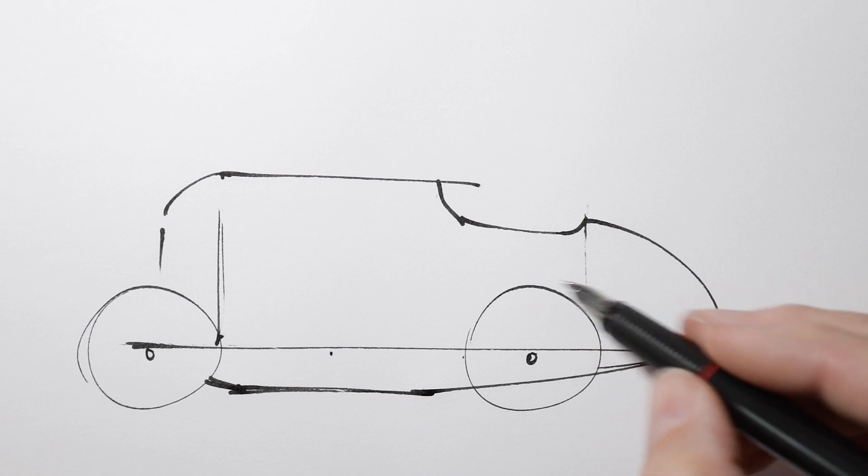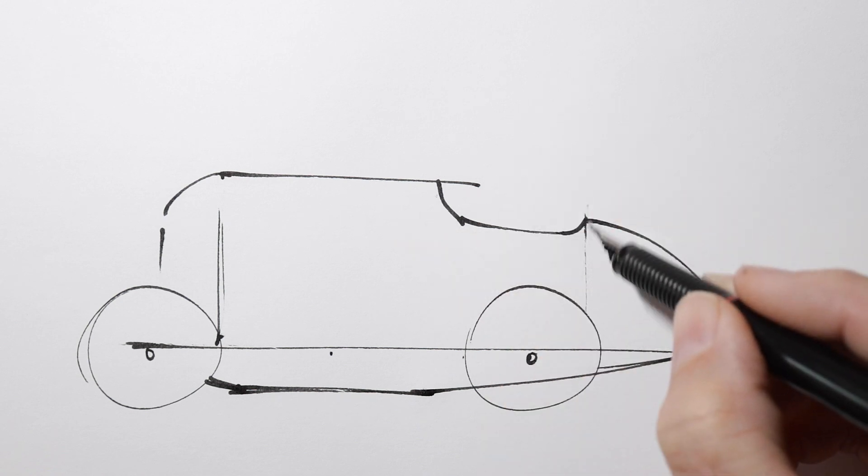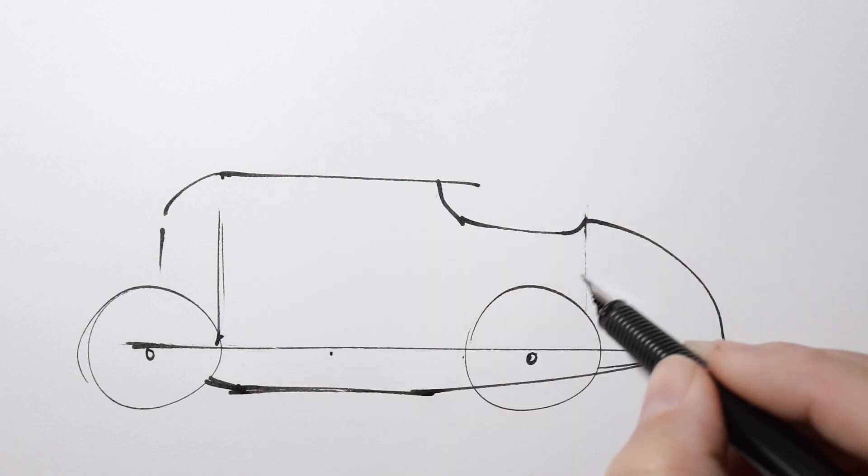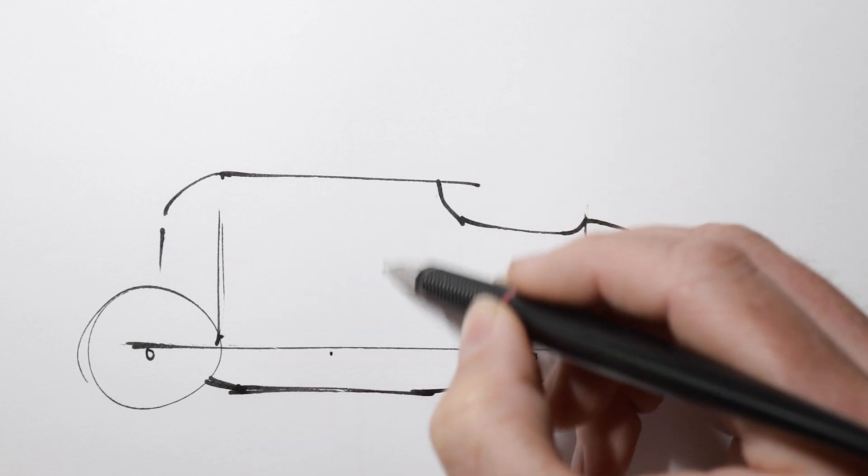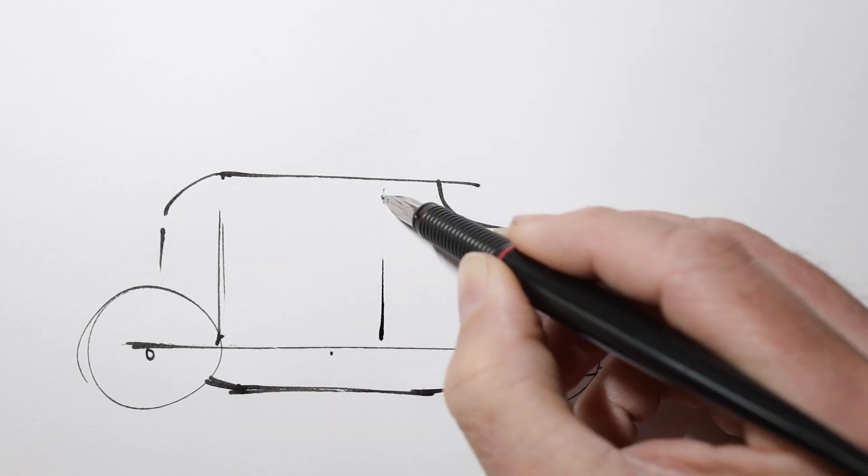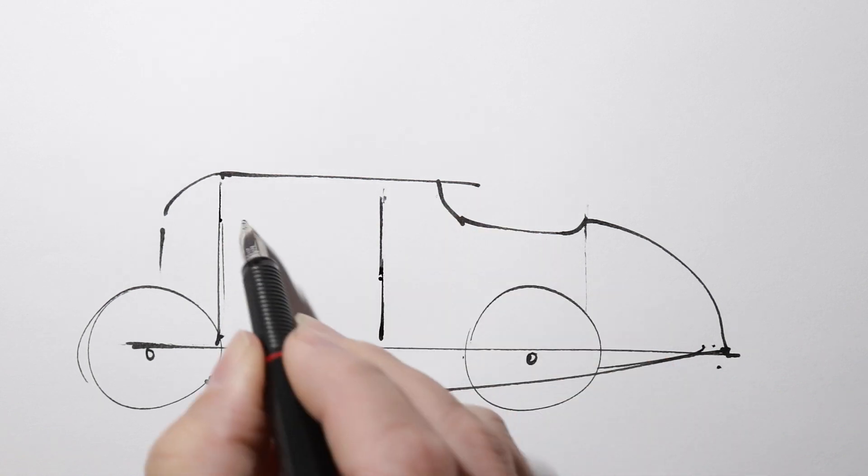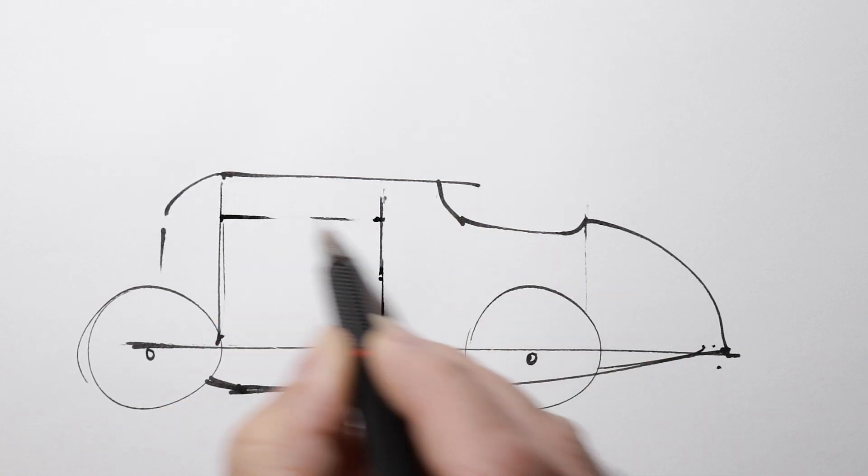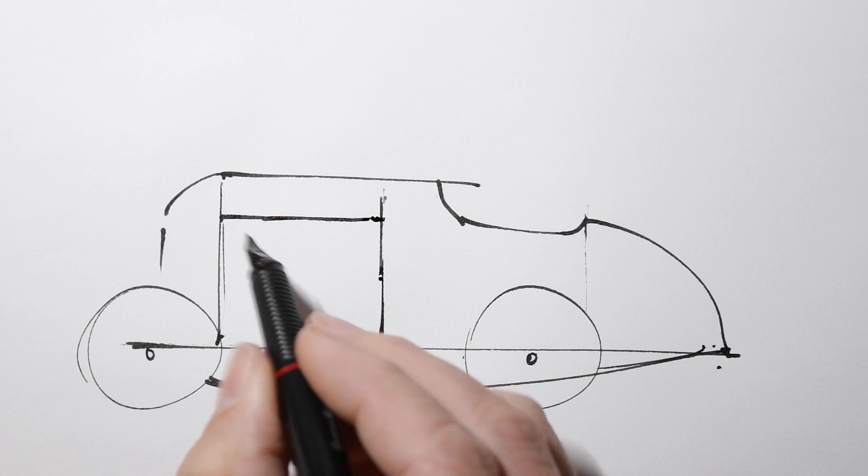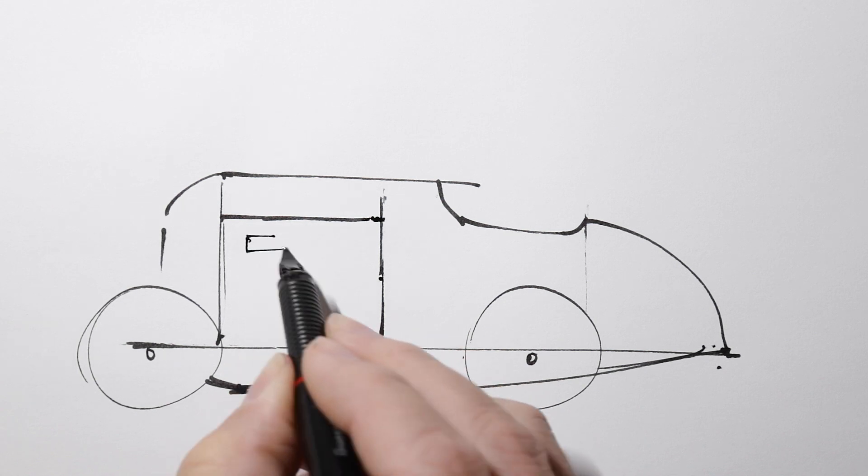Let's have a look. First we need to divide a line between halfway between this line and this line, another vertical. That's our bonnet. And the bonnet has a hinge and two exhausts.